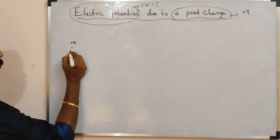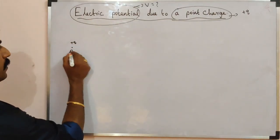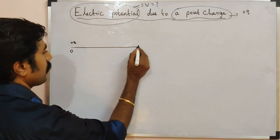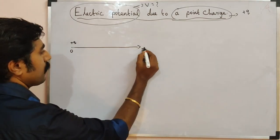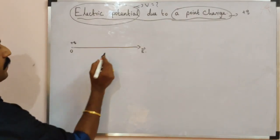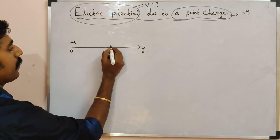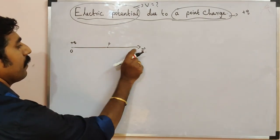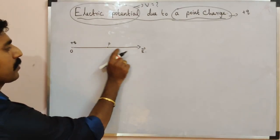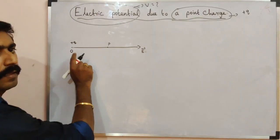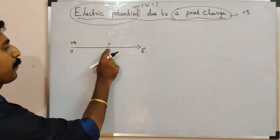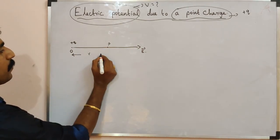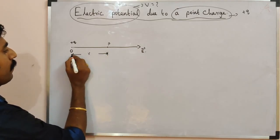This charge is placed at point O, the origin. We know that if the point charge is positive, the direction of the electric field is outwards. Now take another point P in the electric field, at a distance small r from the origin, from the positive charge plus Q.